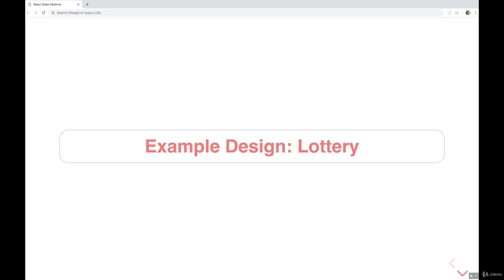All right, welcome back. So keeping in mind the two things we just talked about around designing state—minimizing the state that we store and making sure that we're trying to centralize state in parents to support the downward data flow—let's now talk about an example of component design for a very simple lottery application.